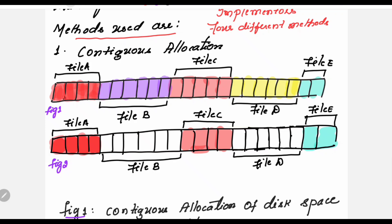Initially the disk is empty — all blocks are empty. You start storing files. File A gets created and takes the first four blocks. Next, file B gets created taking six blocks. File C takes five blocks, file D takes six blocks, and file E takes two blocks. In this way, one after the other, in a continuous manner, all files get stored. This method is called contiguous allocation.